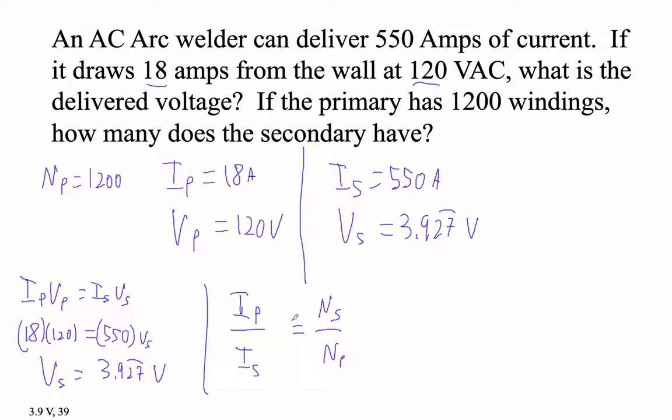Remember, the currents are upside down. They're not, you know, different things on top. So let's do this. So the primary is 18, secondary 18 amps. Secondary is 550 amps. That equals N secondary. That's what we're trying to solve for, and then 1,200.